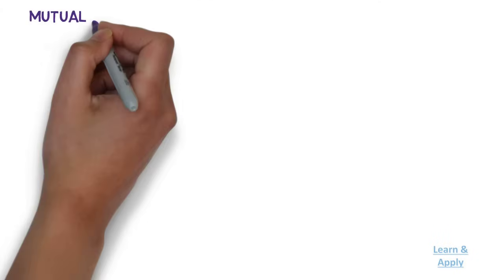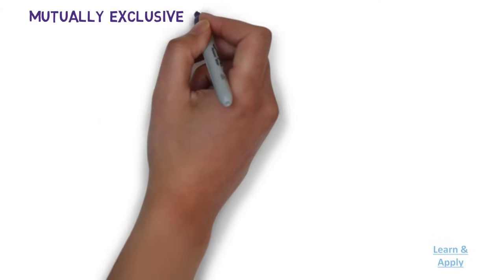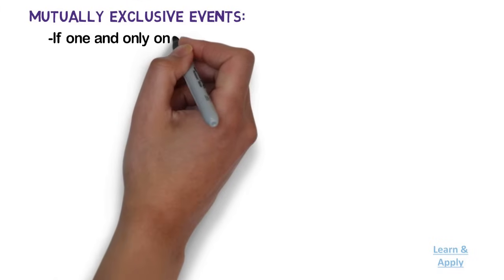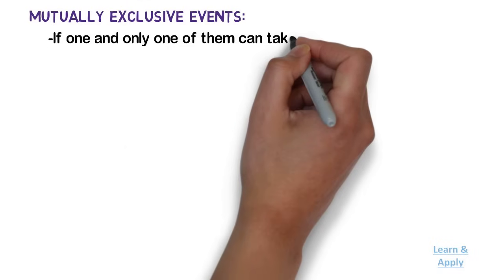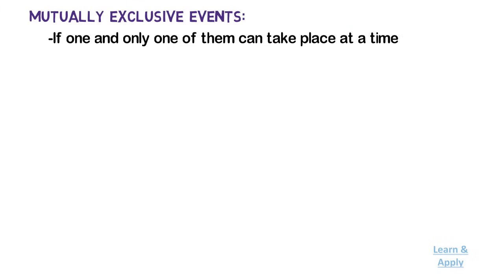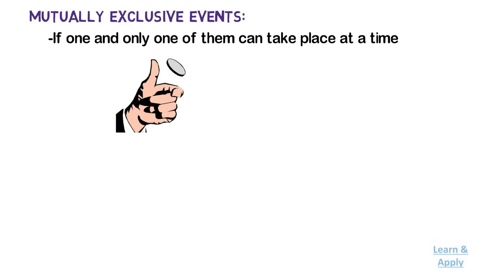Mutually Exclusive Events: two events are said to be mutually exclusive if one and only one of them can take place at a time. In our example of tossing a coin, only head or tail can occur.